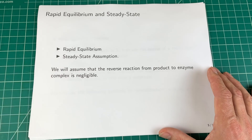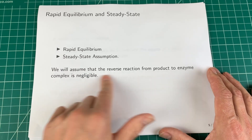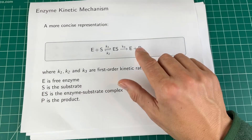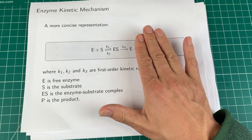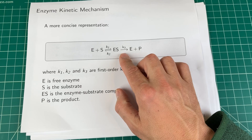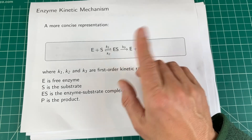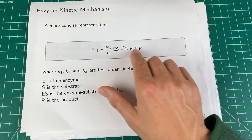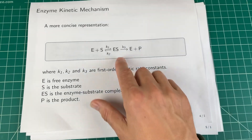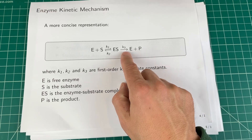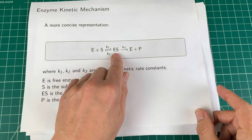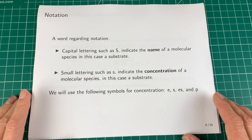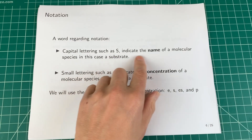One assumption I'm going to make is that the reverse reaction from product back to enzyme-substrate complex is negligible. I'll assume there's no product, so that reverse reaction pretty much doesn't exist. We can arrange this in a test-tube experiment. In a cell, there'll always be some product, so this may not be applicable there — but that can be adjusted later. For now, let's assume there's no appreciable reverse reaction back to the enzyme-substrate complex.